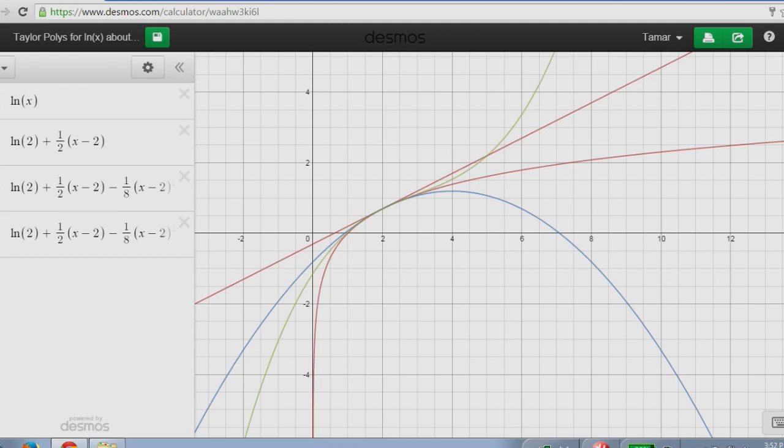So we notice that the higher the degree polynomial, the closer the graph mimics the graph of natural log of x near x equals 2. We also notice that the higher the degree, the polynomial, the further from x equals 2 we can go and be within a certain degree of accuracy.